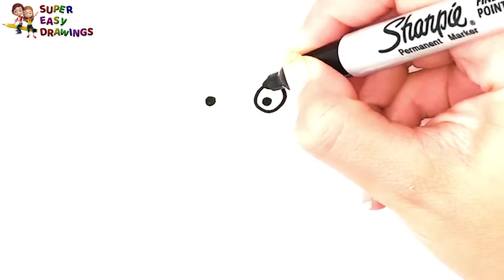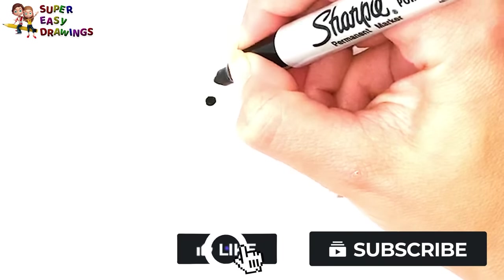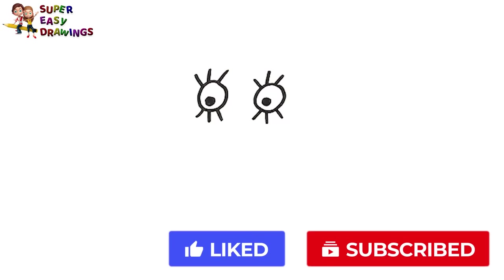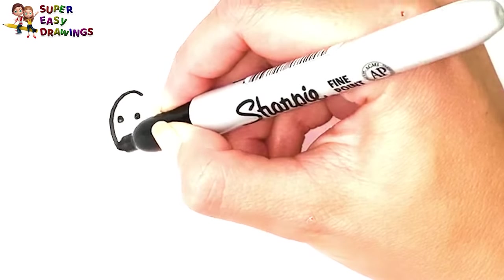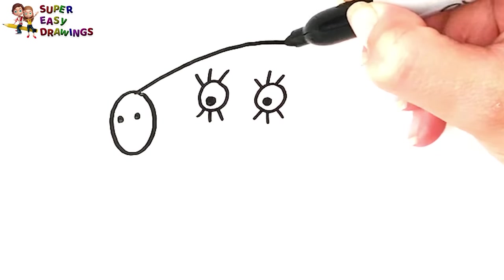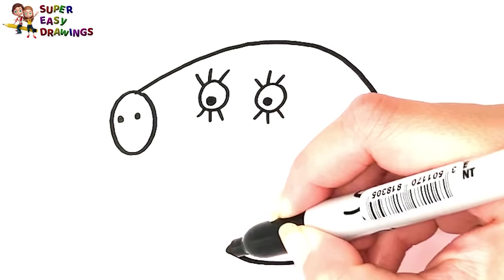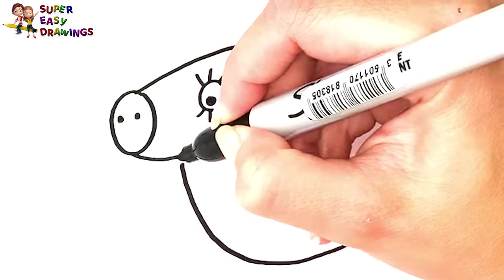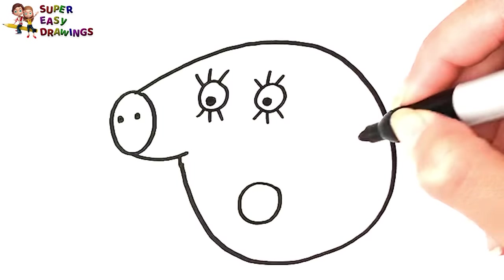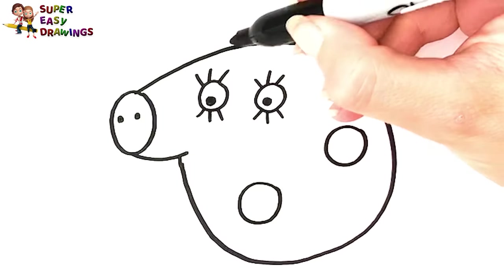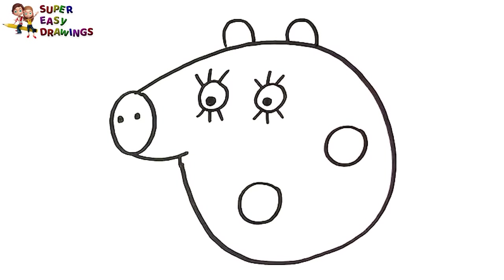At first I'm going to draw Mummy Pig's eyes. Then her nose, and the shape of her head. I draw her mouth and a circle for her cheek. Finally, her two ears.